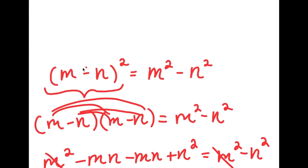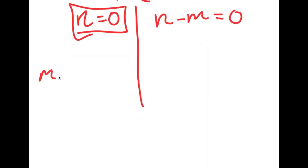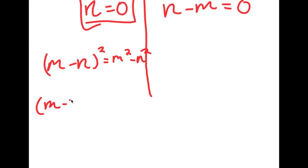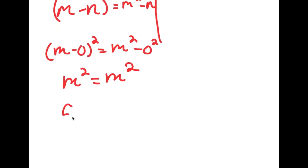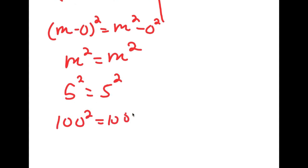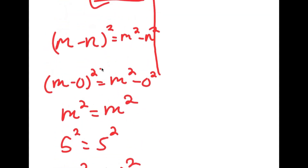Going back to the original equation m minus n squared equals m squared minus n squared: if n equals zero, I get m minus 0 squared equals m squared minus 0 squared, which simplifies to m squared equals m squared. This means m can equal any number — for example, if m equals 5, then 25 equals 25; if m equals 100, then 100 squared equals 100 squared.